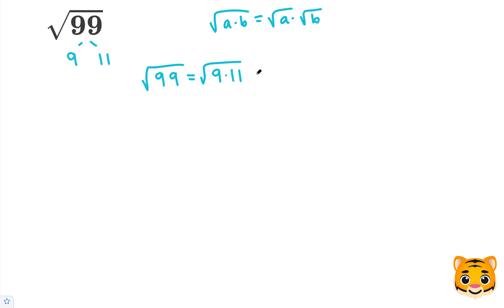Using our math rule, we can say that the square root of 9 times 11 is equal to the square root of 9 times the square root of 11. 3 squared is equal to 9, so the square root of 9 is equal to 3, so we can replace the square root of 9 with 3, simplifying our answer to 3 times the square root of 11.